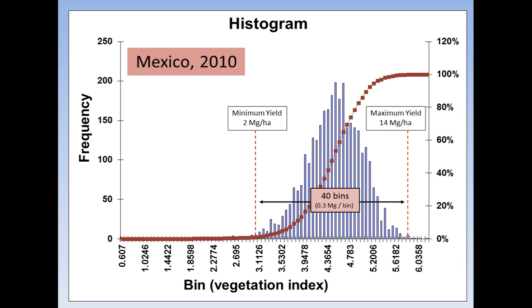Even though the bin values here are vegetation index values, we're now going to be able to assign each one of those a yield value. And therefore, we can go back and, instead of making a map of our vegetation index, we can make a map of potential yield. That's our estimate of yield. So that's our proxy yield map.